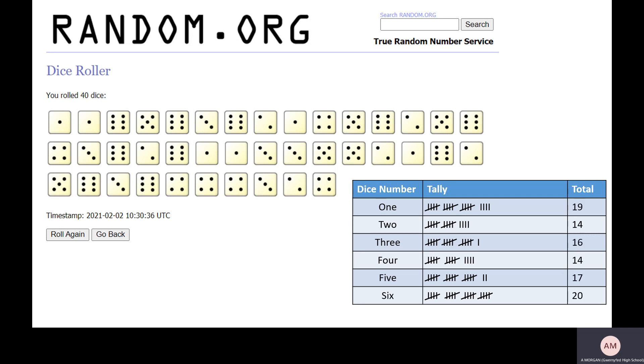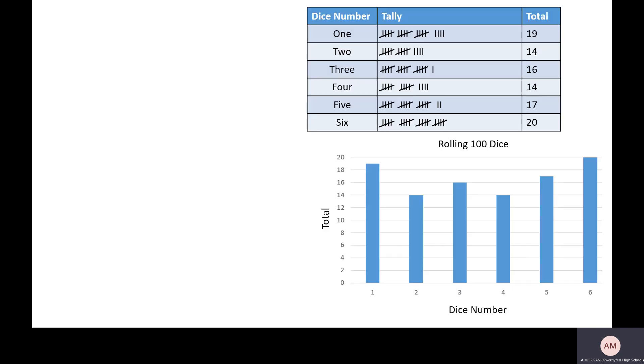So let's total them up. And let's draw a graph. And you can see now that it's still a bit bumpy, but there's not the extreme that there was before.